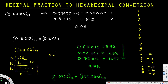So the final answer is: 268.62 base 10 equals 10C.9EB base 16. That's how we do the conversion from a decimal fraction to hexadecimal. I hope this helps — thanks for watching.